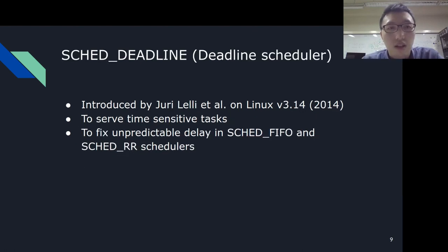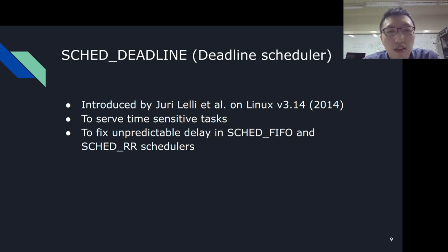The next scheduler is the SCHED_DEADLINE scheduler, introduced by Juri Lelli et al. in Linux version 3.14. The main purpose of this scheduler is to serve time-sensitive tasks. In the days without this scheduler, tasks having precise timing requirements had to resort to SCHED_RR or SCHED_FIFO. However, both of them schedule tasks with fixed priority, which results in these tasks potentially being delayed by their priority. SCHED_DEADLINE, on the other hand, guarantees the required timing by performing a schedulability test prior to actually scheduling the task. In other words, if the timing requirement cannot be met, the scheduler simply rejects to schedule the task.